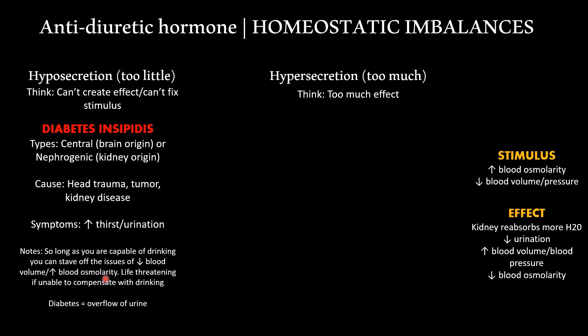Why are they both called diabetes? Diabetes means an overflow or overproduction of urine. Diabetes mellitus — mellitus means sweet — people are peeing a lot because they have high blood sugar, so it's sweet pee. Diabetes insipidus — insipidus means clear — it's clear pee because you don't have ADH. Both disorders involve excessive urination; it's just for different reasons.